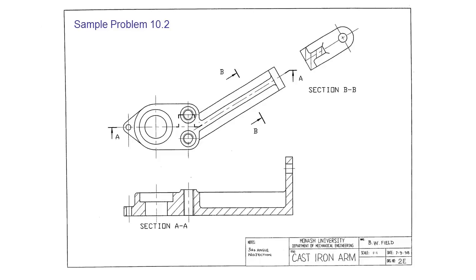Okay so here's our sample problem. We've got this cast iron arm. So let's just take a look at the conventions we have used here.